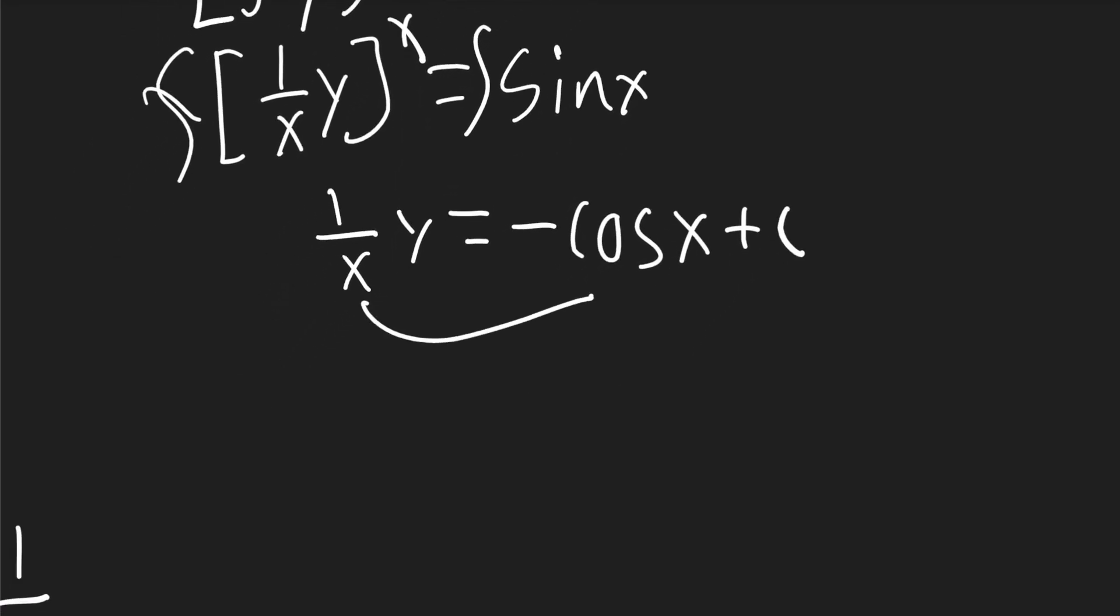Now we multiply that x to both those terms on the right side, and y will be equal to negative x cosine x plus c times x. And that is your final answer.